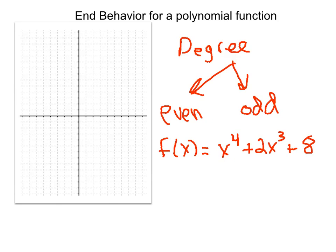The end behavior describes what's happening at the ends of the graph — way out to the right and way out to the left. We don't necessarily care what's happening in the middle. We're talking about very large positive values of x on one side, and very negative values of x on the other side. We want to know whether those ends are pointing up or pointing down, and whether they're pointing in the same direction. For very large values of x, the largest term always wins — it determines whether we approach positive or negative infinity.